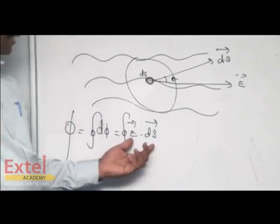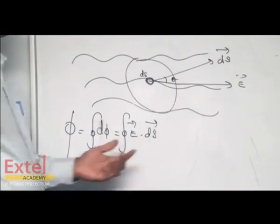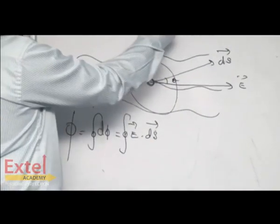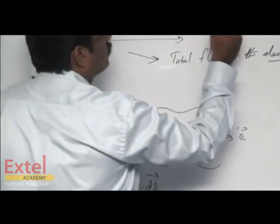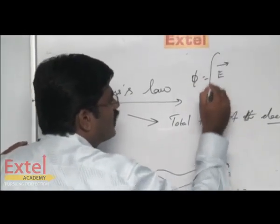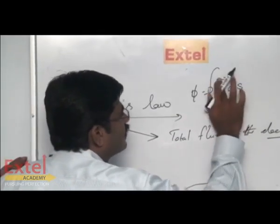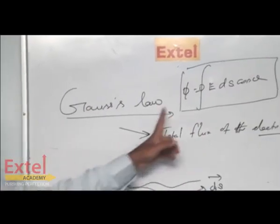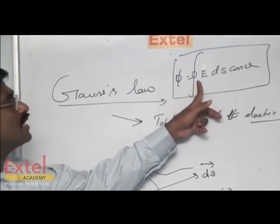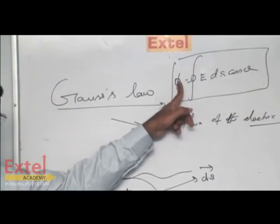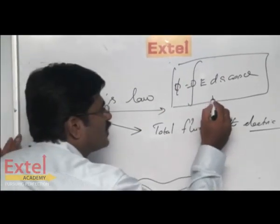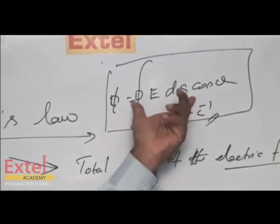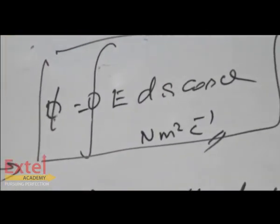Expanding the dot product: Φ (total flux) = ∮ E dS cos θ. The unit of flux is N·m²·C⁻¹. This expression is an important exam question. You should also be able to define flux — you have already studied this concept in earlier standards.